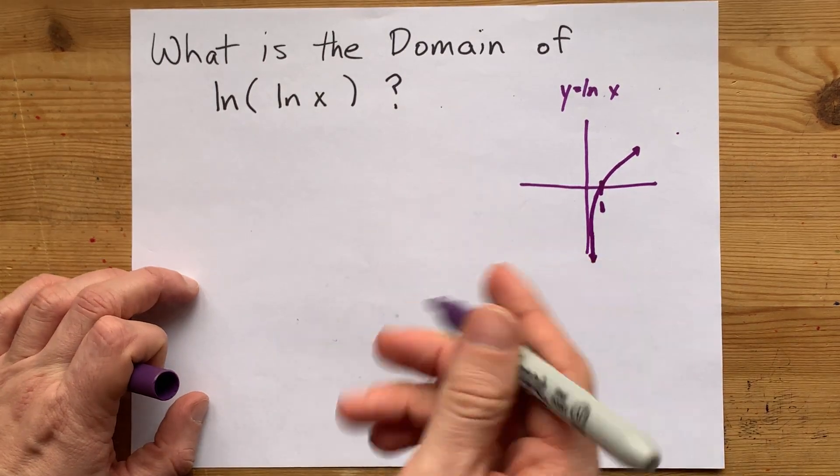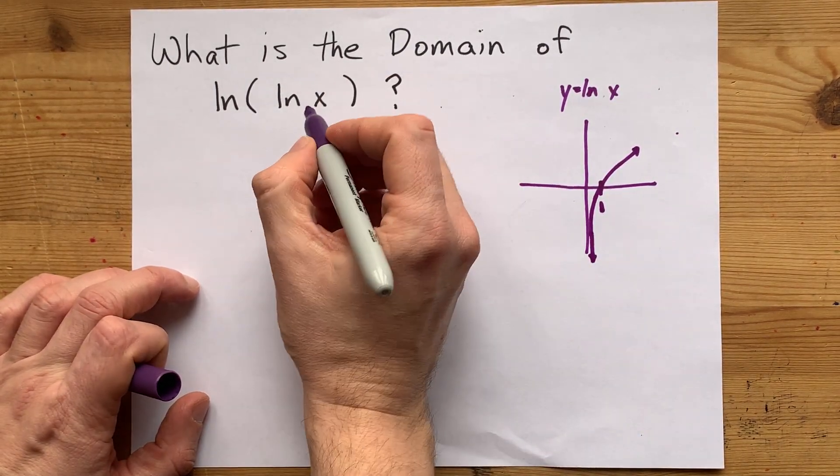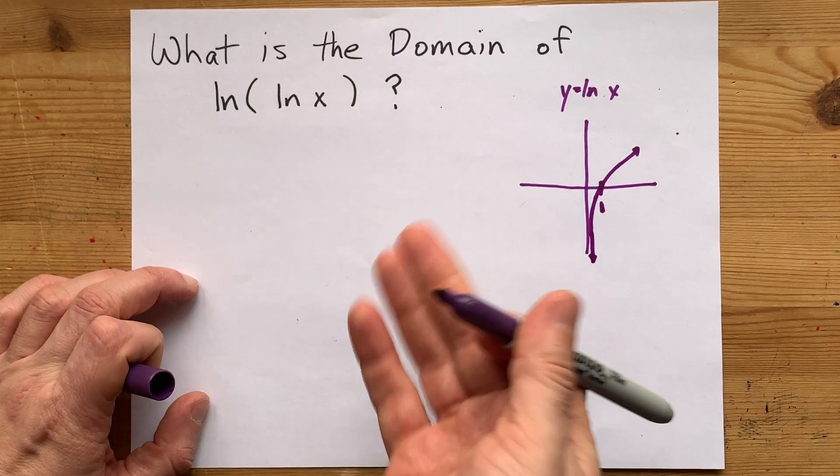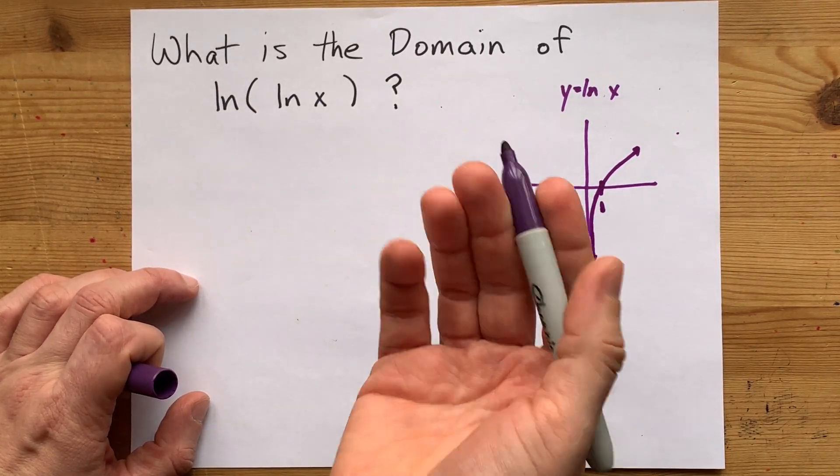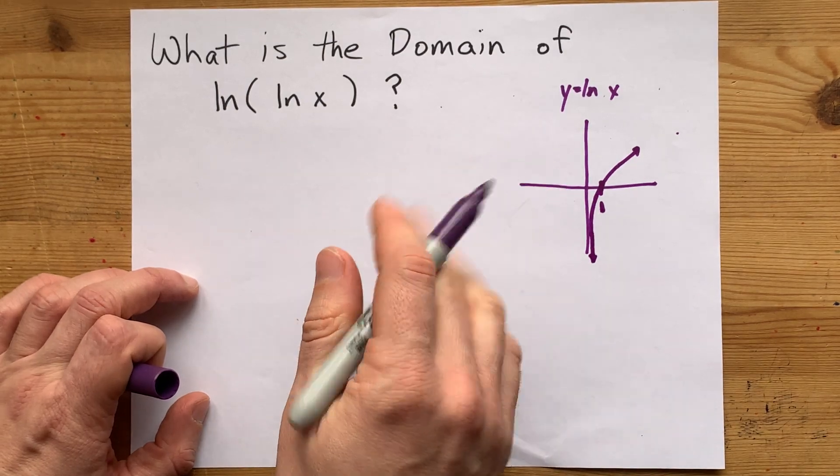Now, what does that mean for you? Well, what it means is that this x certainly can't be a negative number because you can't take the ln of a negative, and it can't be 0. So that x certainly has to be positive, but there's more.